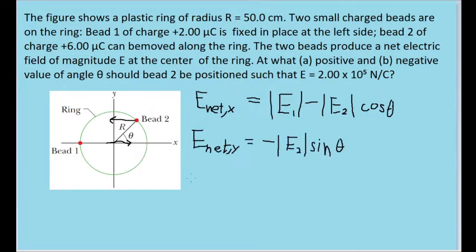For the net electric field in the y-components, there is no contribution from bead 1, since bead 1 is on the x-axis with the central point. There is no angle at which it will exert some sort of vertical field on the central point. So the only contribution comes from bead 2, which is again at the same angle, only this time it's going to be a sine of theta.